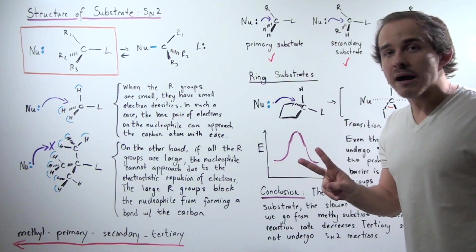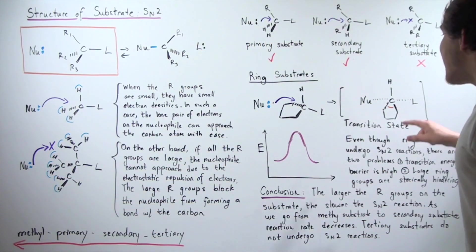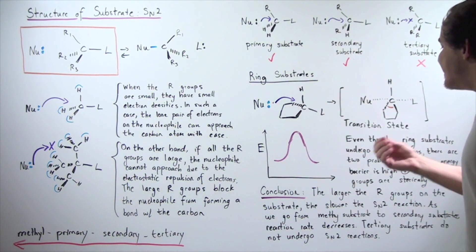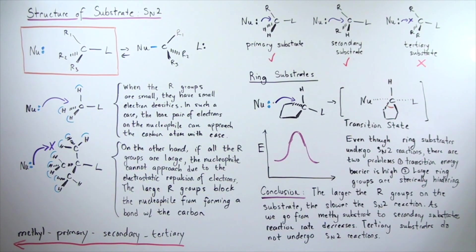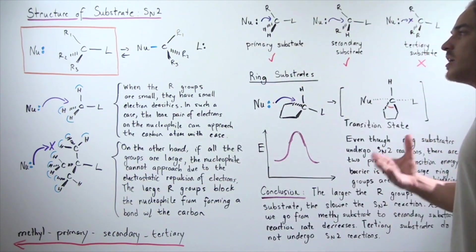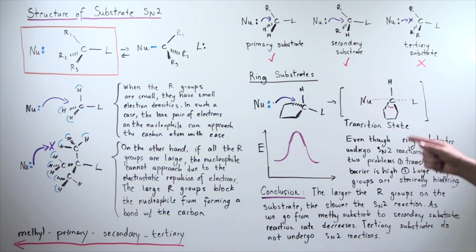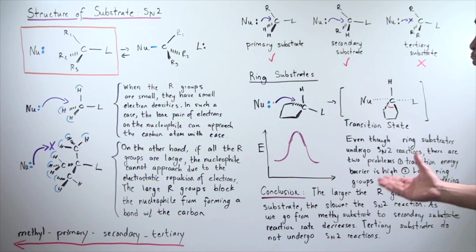So ring structures have two problems. First, they have large R groups which cause steric hindrance and create electrostatic repulsion. Second, in the transition state, there is this angle difference which raises our transition state energy, destabilizing our reaction. Even though ring substrates do undergo SN2 reactions, the two main problems are that transition energy is too high, and the large ring groups are sterically hindering with a lot of electrostatic repulsion. Our conclusion: the larger the R groups on the substrate, the slower the SN2 reaction. As we go from our methyl substrate to our tertiary substrate, our rate decreases. Tertiary substrates do not undergo SN2 reactions at all.